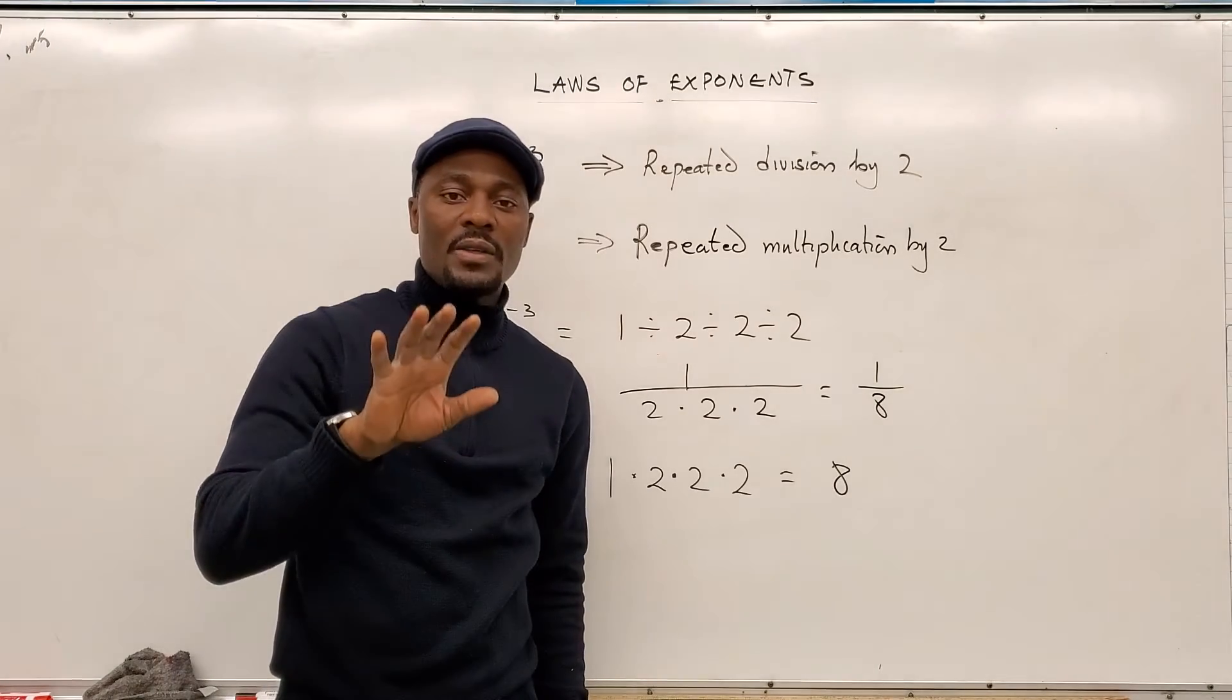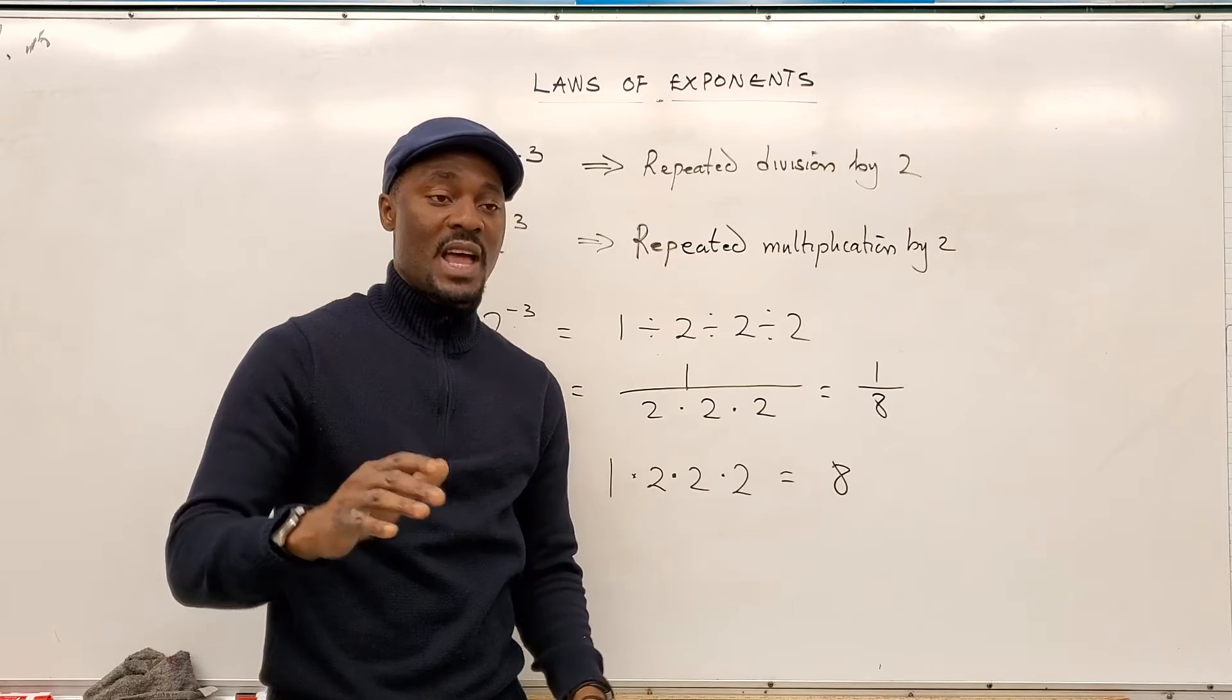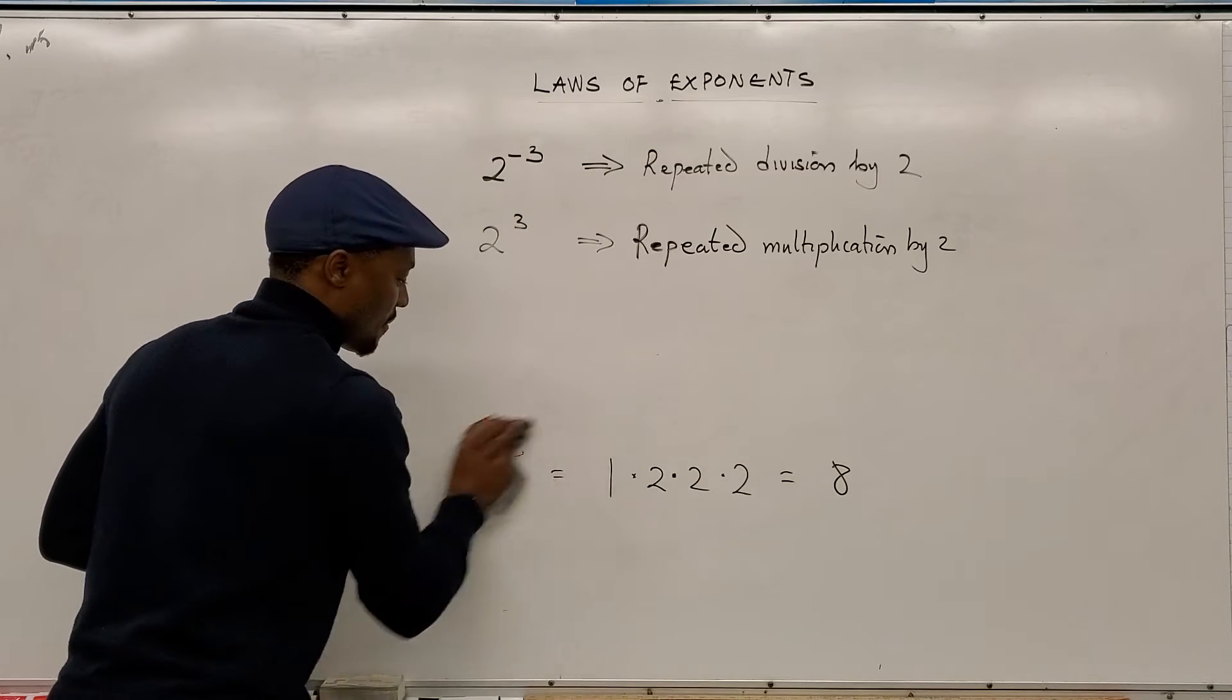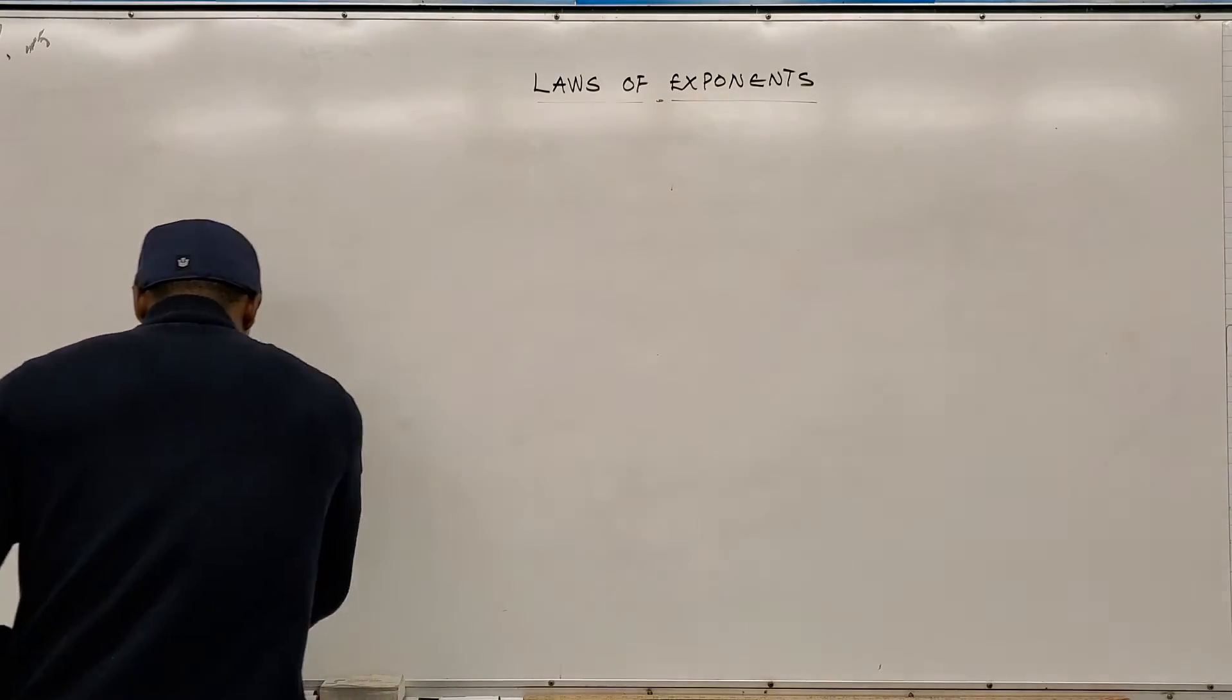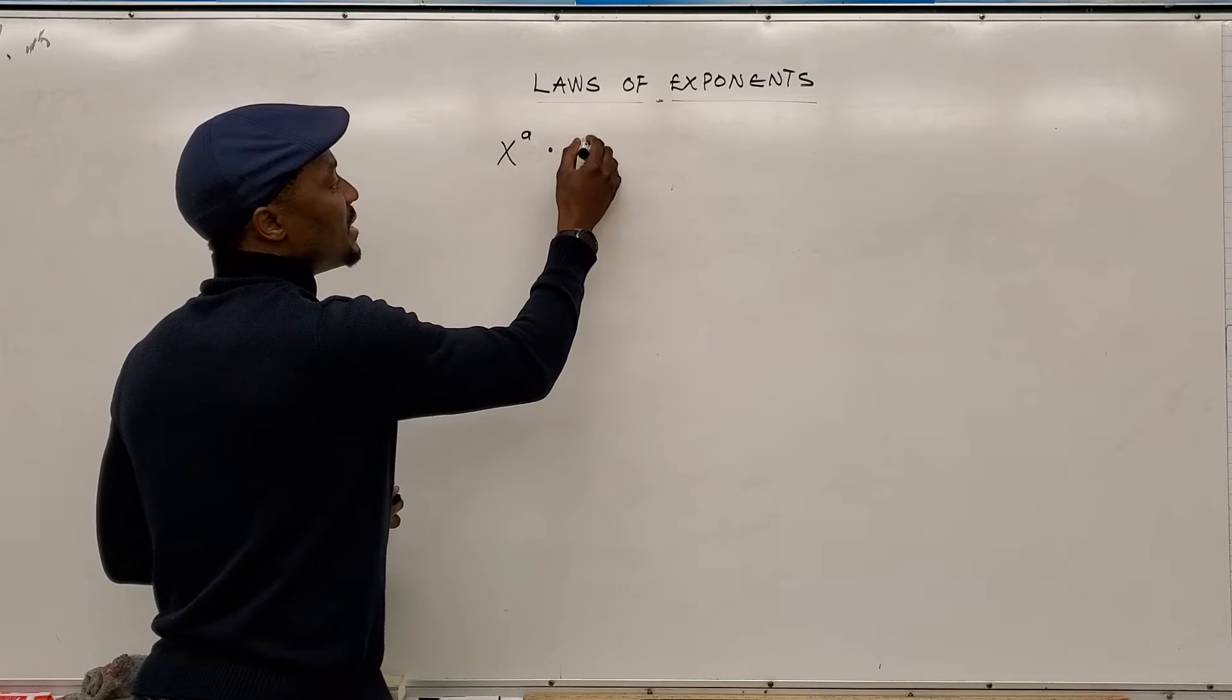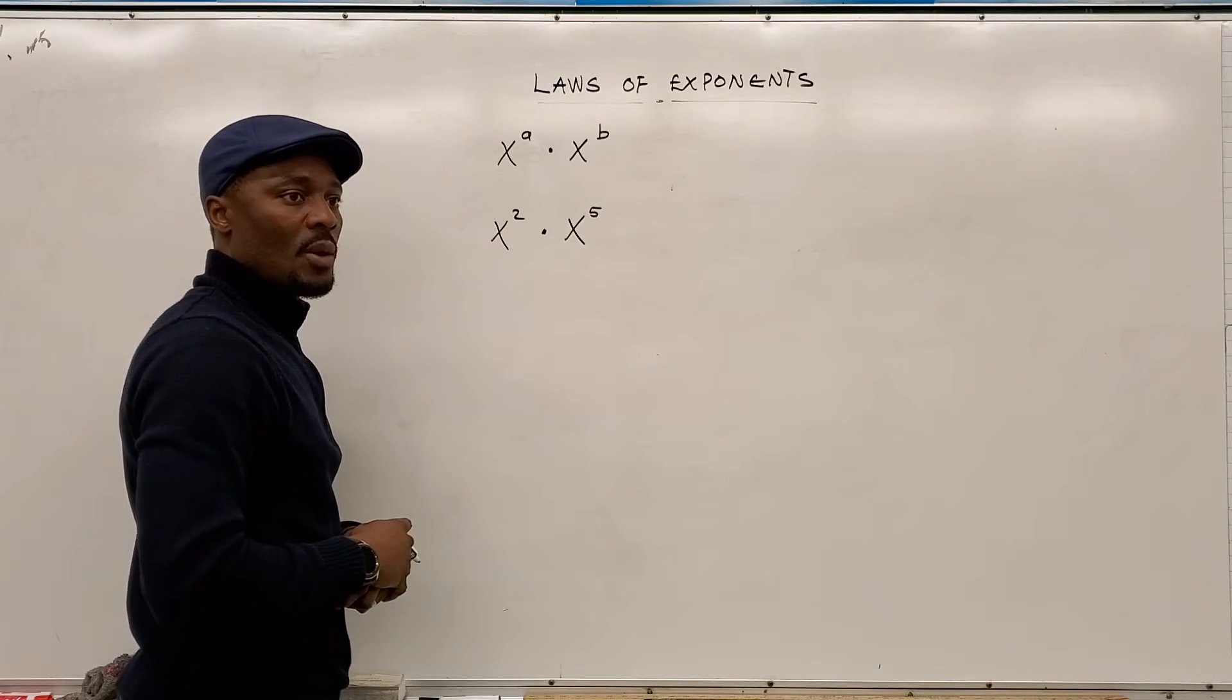Now, there is a simple law that we always apply. It is the law of multiplication. We also have a law that's very similar to that. It's called the law of division. I'm just going to write them on the board, and then you see. So, if you have x raised to power a, and you're multiplying it by x to the power b, we'll take an example. So, you have x raised to power 2. You're multiplying it by x raised to power 5. What will your answer be?